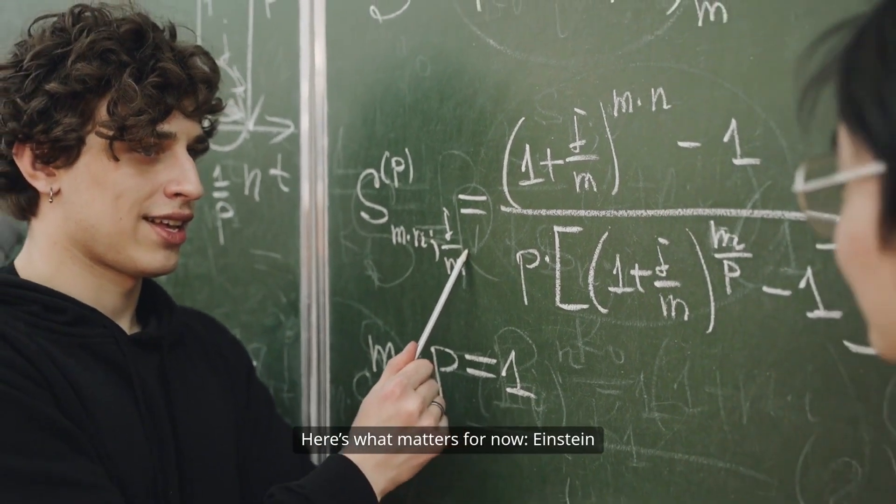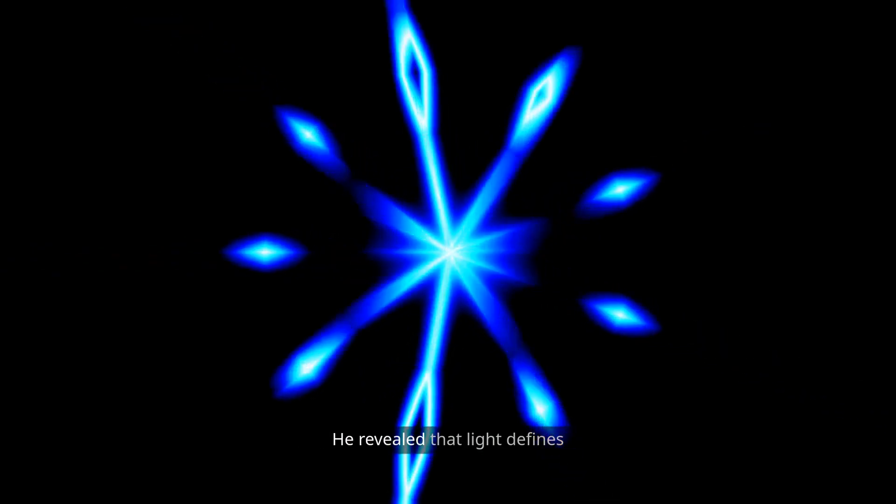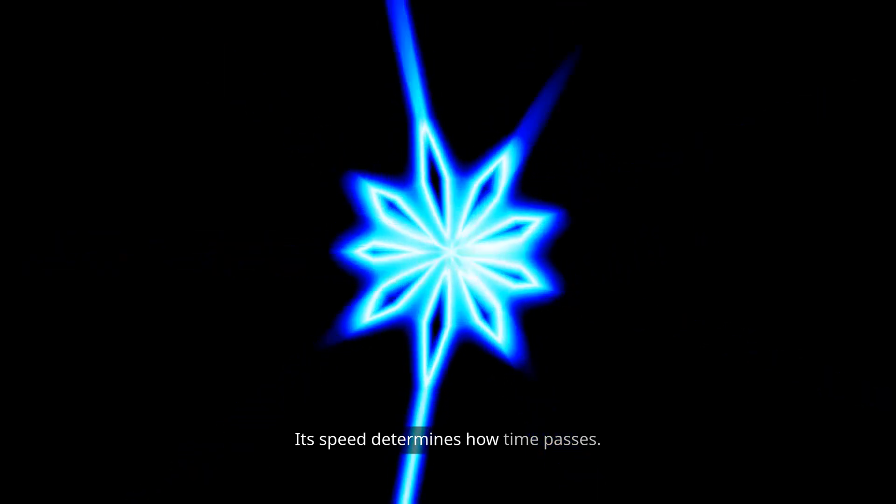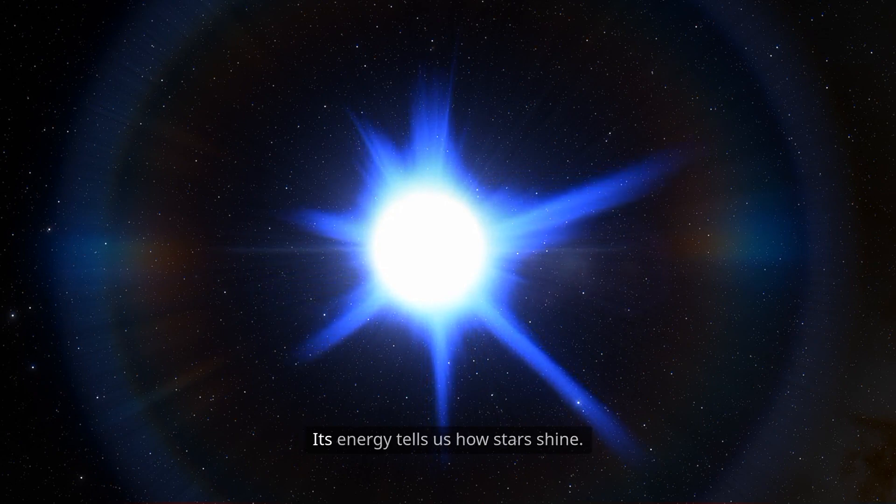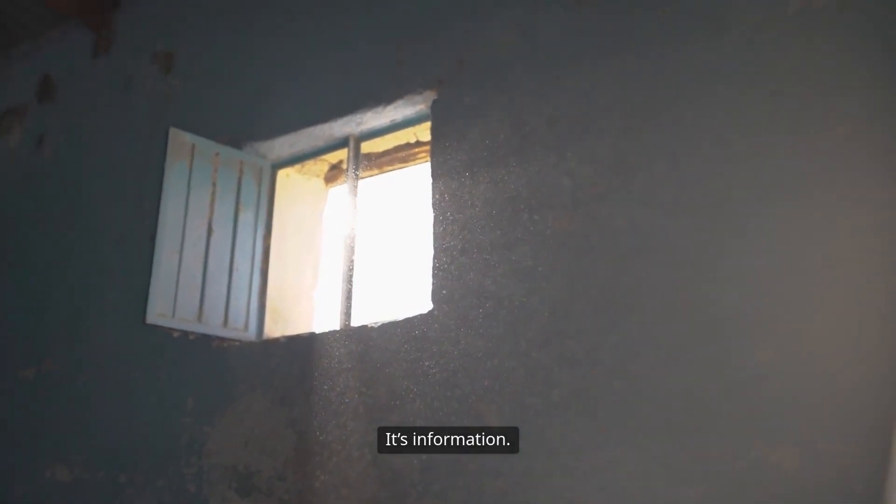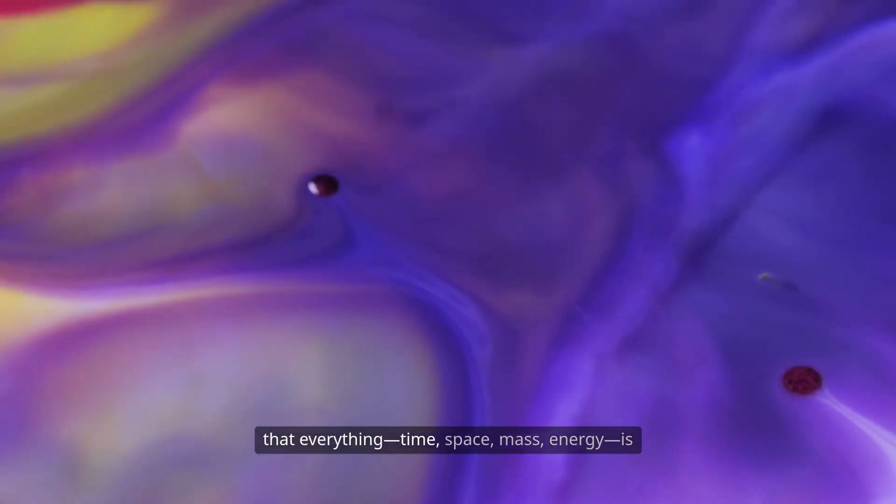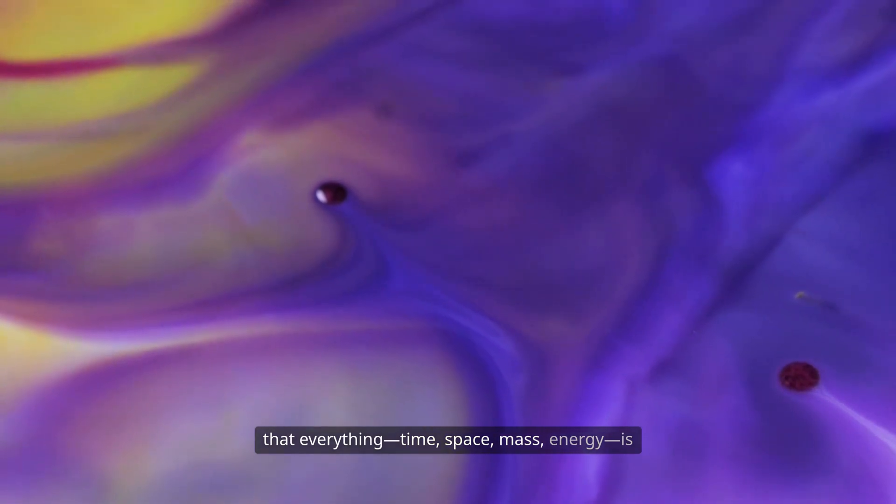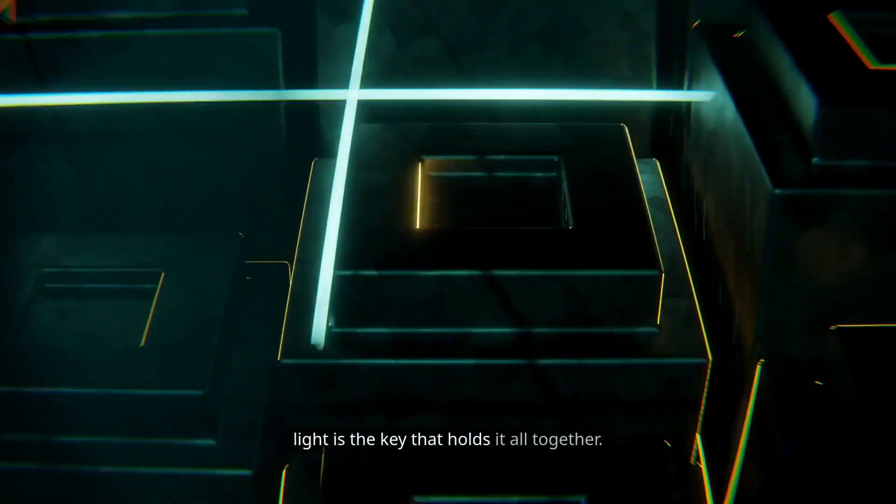Here's what matters for now. Einstein didn't just explain how light behaves. He revealed that light defines the behavior of reality. Its speed determines how time passes. Its path reveals how space is shaped. Its energy tells us how stars shine. Light isn't just illumination. It's information. Through Einstein's eyes, we began to see that everything—time, space, mass, energy—is part of one grand equation, and light is the key that holds it all together.